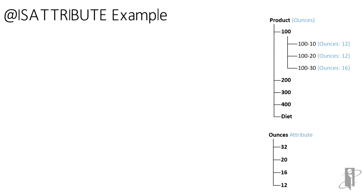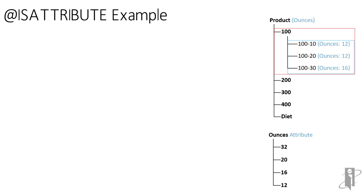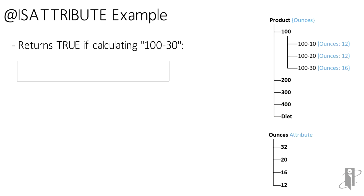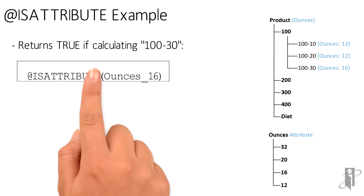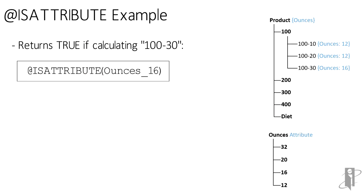In our example, Product is our base dimension. I'm only showing the children of Product 100, which is Colas. You'll see 100-10 and 100-20 come in 12-ounce sizes — I have no idea how many grams or kilograms that actually is; sorry, I'm metric ignorant. 100-30 comes in 16-ounce sizes only, so my @IsAttribute function on Ounces_16 will return true in this example only for 100-30.